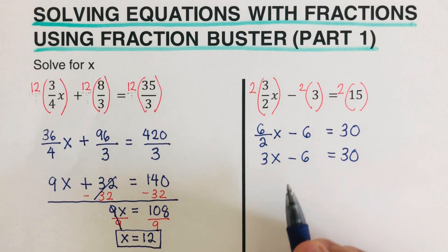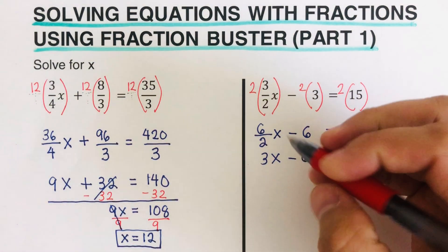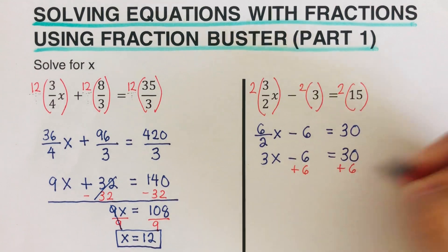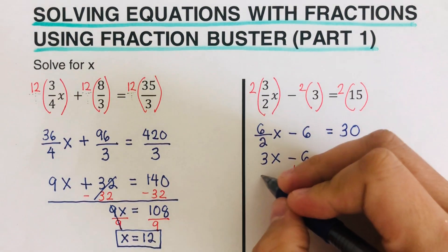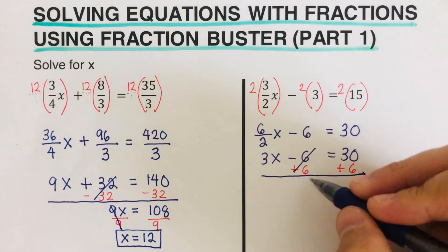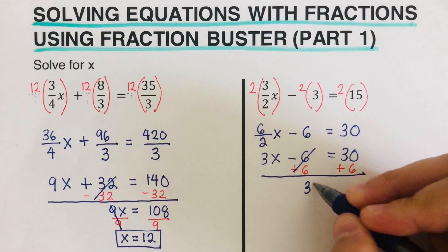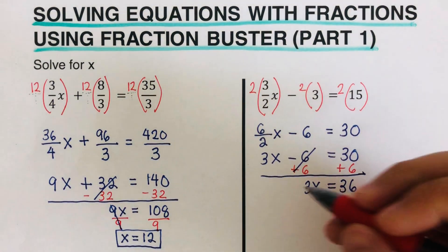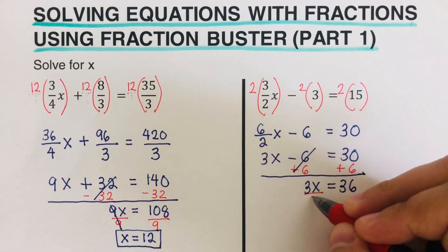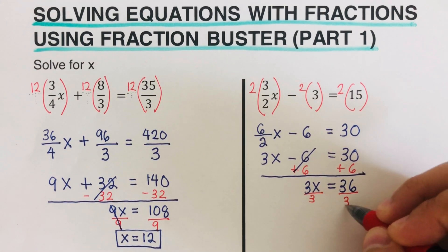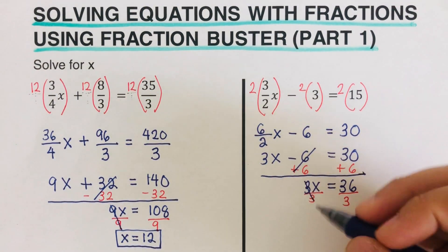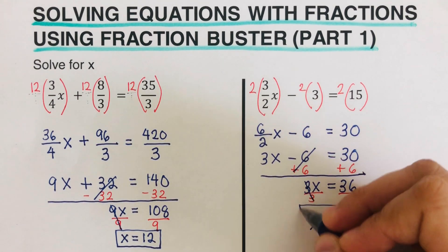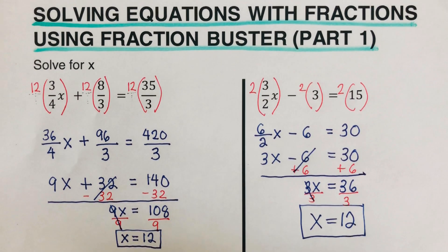We add 6 to both sides, crossing out the 6 on the left, leaving 3x = 36. Dividing both sides by 3 gives x = 12. Did you get the same answer? x = 12.